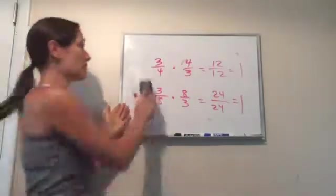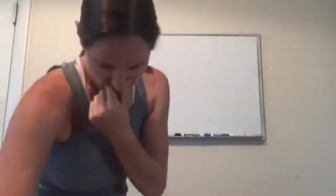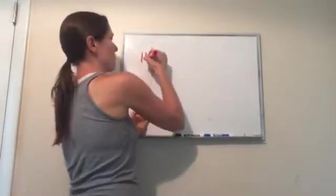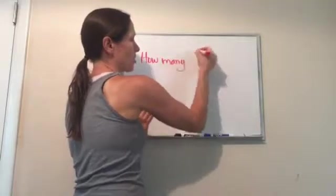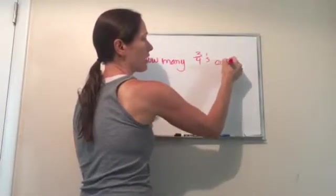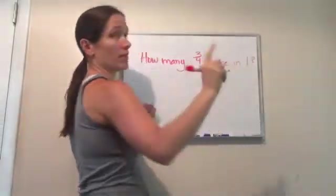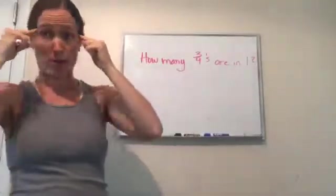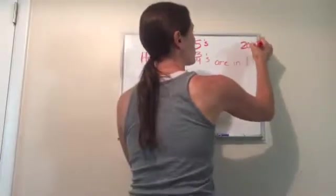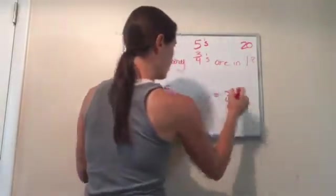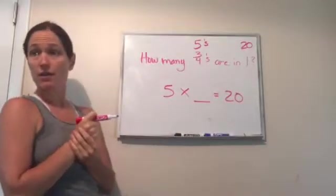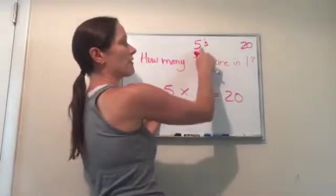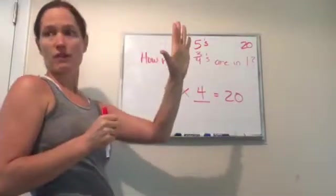If I asked you this, this is kind of confusing but pay attention. How many three-fourths are in one? Now stay with me. Sometimes this can get confusing when we're looking at a fraction, so I'm going to change the numbers just for my brain. How many fives are in twenty? Five equals twenty. Five times what? Four, right. Five times four is twenty, so how many fives? Five, ten, fifteen, twenty - four of them. You see how we did that?